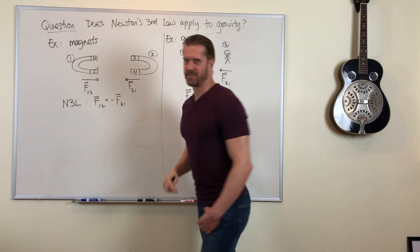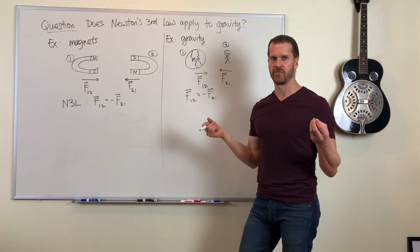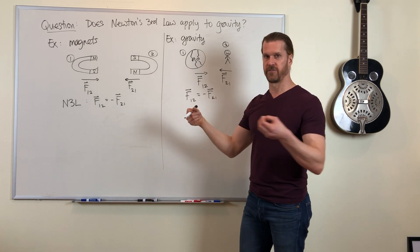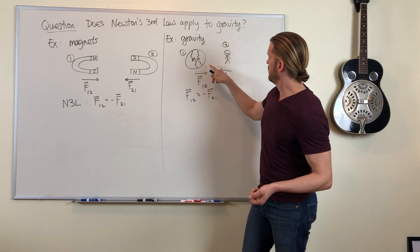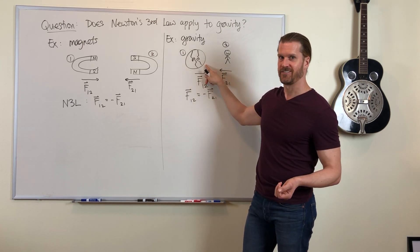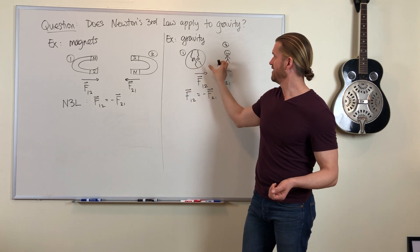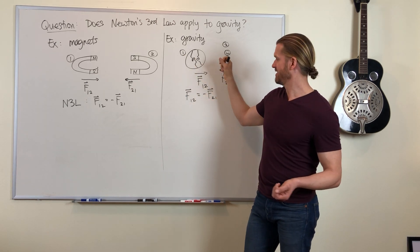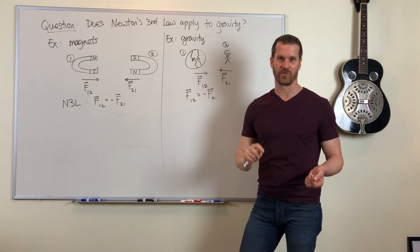When we have two magnets, if they're roughly the same size and you let them go, you'll see them both move toward each other. But in this case, if you let an object go, you only notice the object moving toward the Earth. You don't notice the Earth moving toward the object.